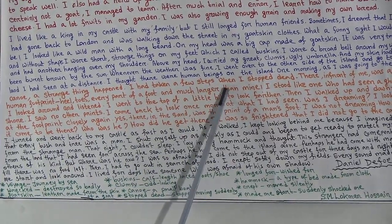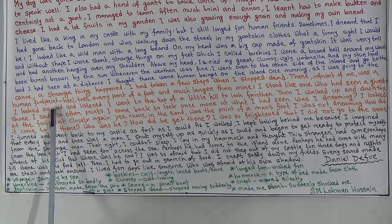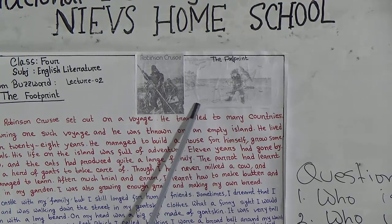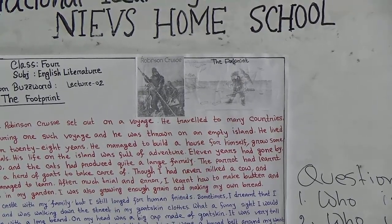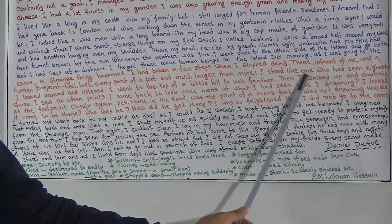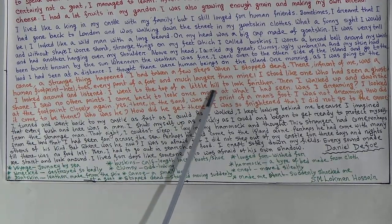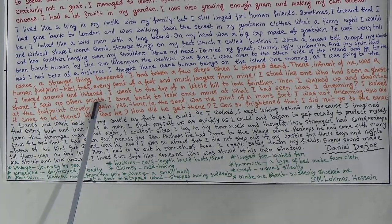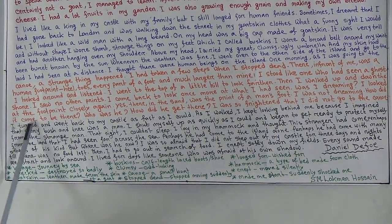'One morning as I was going to the canal, a strange thing happened. I had taken a few steps when I stopped dead.' There in front of him was a human footprint — here you can see a picture of a footprint. It looks like a human footprint but actually these are the footprints of a cannibal who eats human meat. 'Heel, toes, every part of a foot — and much larger than mine. I stood like one who had seen a ghost. I looked around and listened. I went to the top of a little hill to look further, then walked up and down the shore. I saw no other prints.'